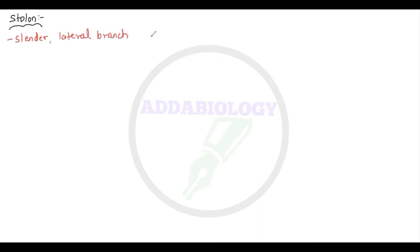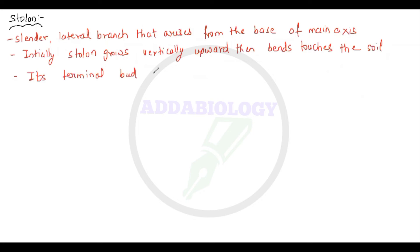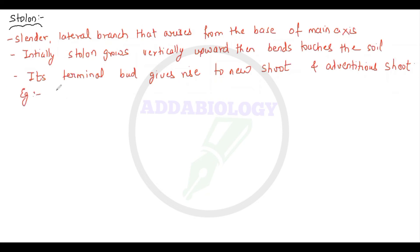The second example in sub-aerial modification is the stolon. A stolon is a slender lateral branch that arises from the base of the main axis. Initially the stolon grows vertically upward, then it bends and touches the soil. It has a terminal bud at the tip of the stem that gives rise to a new shoot and even adventitious roots. Examples include jasmine, mentha, strawberry, and Colocasia.